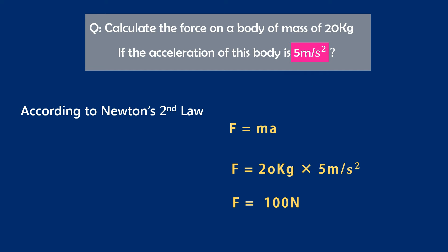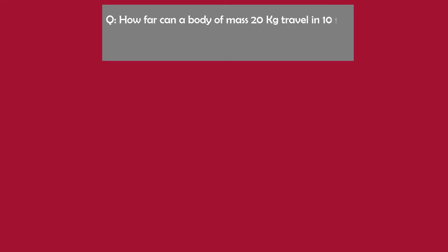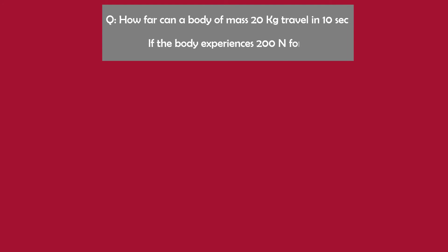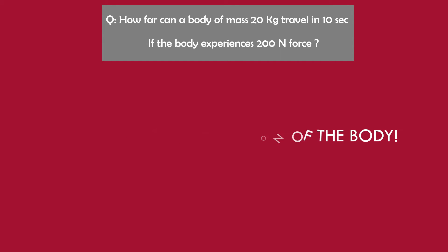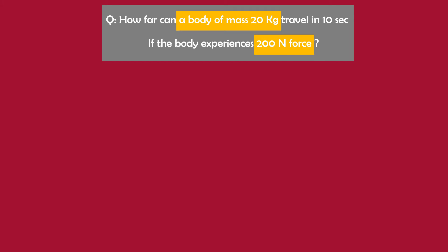Or we can say that 100 newton is the force that can produce 5 meter per second square acceleration in a mass of 20 kg. Now let me teach you how far can a body of mass 20 kg travel in 10 seconds if the body experiences 200 newton force. In such type of numericals, first of all you should find the acceleration of the body. We are already given two quantities: the mass of the body and the force on the body.